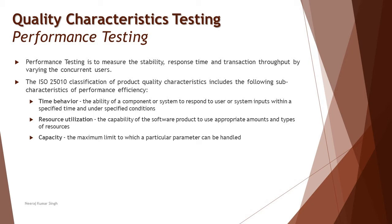When resource utilization is high, it may be time to upgrade hardware and test with more users. Finally, capacity is the maximum limit to which a particular parameter can be handled — finding breakpoints and limits on different attributes, including number of users and resource utilization thresholds. The goal is to determine the optimum utilization that is safe for all users working simultaneously.